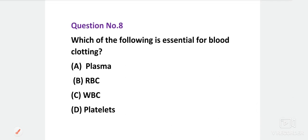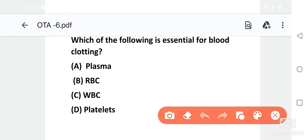Next question. Which of the following is essential for blood clotting? Options are plasma, RBC, WBC or platelet. This question is easy, answer in the comment section. The right answer is platelets.